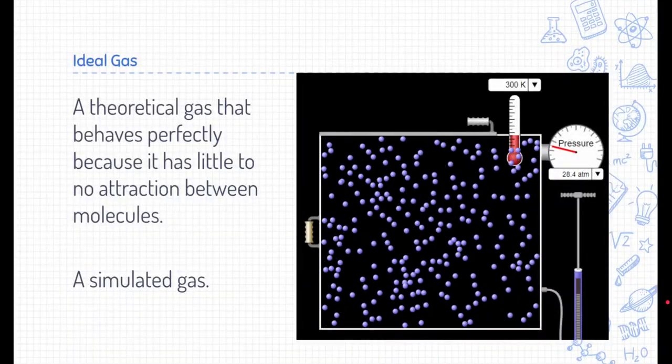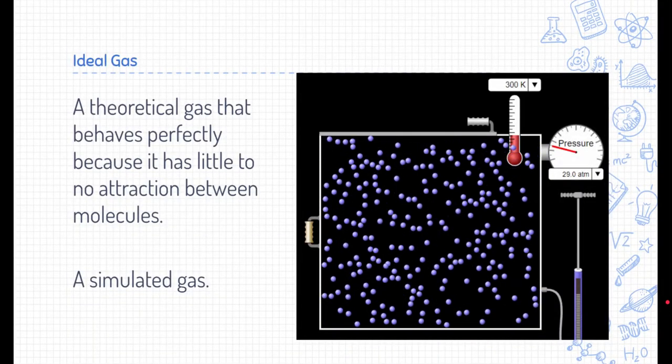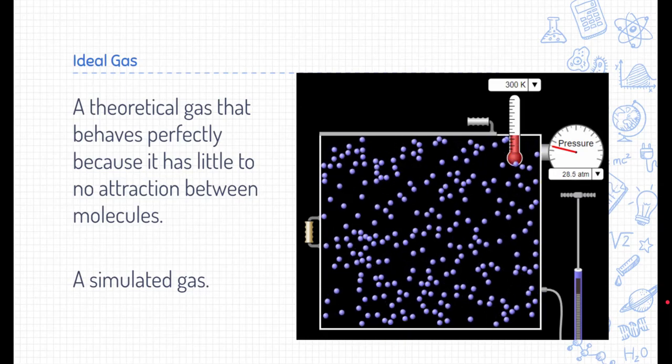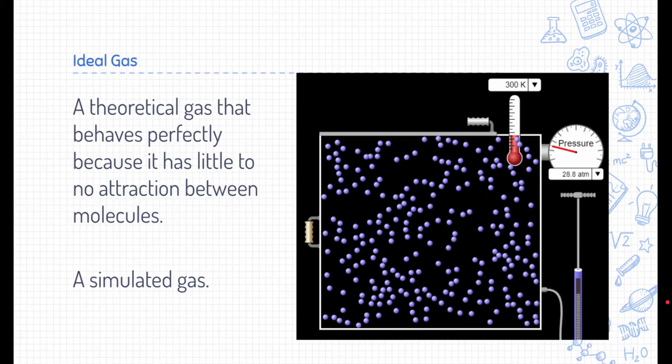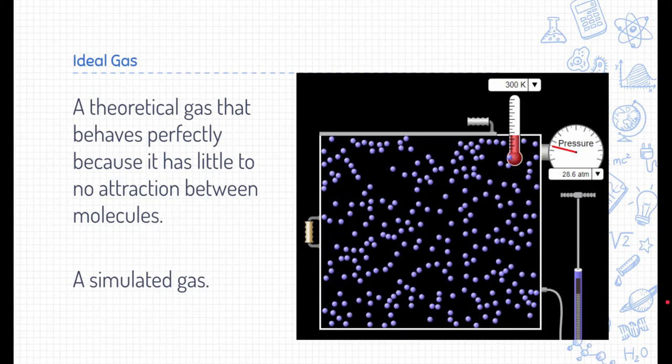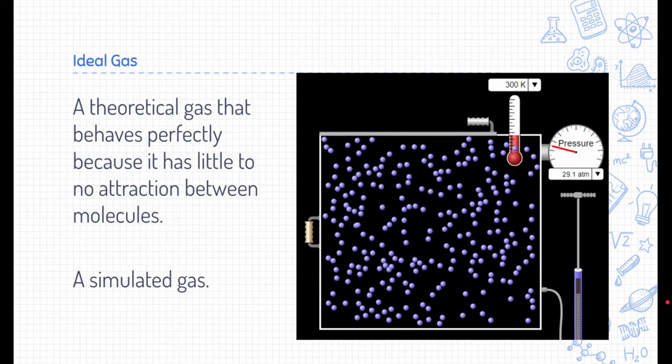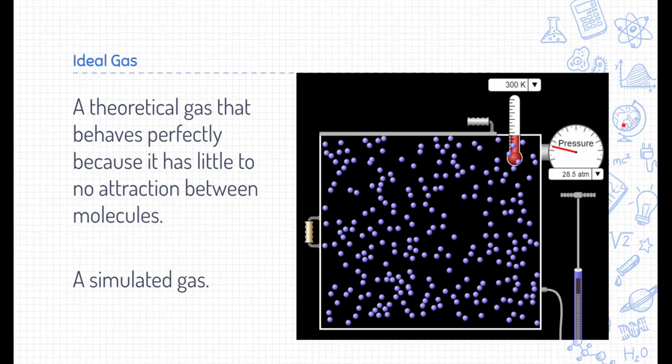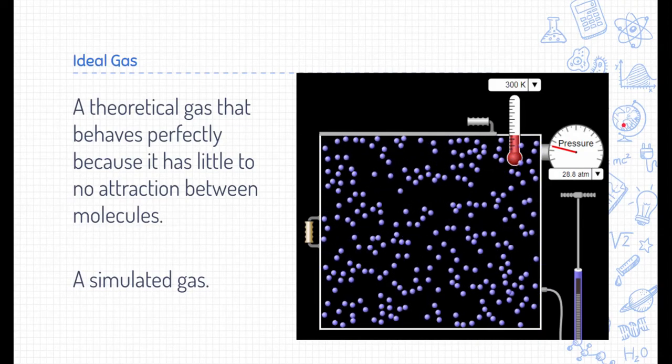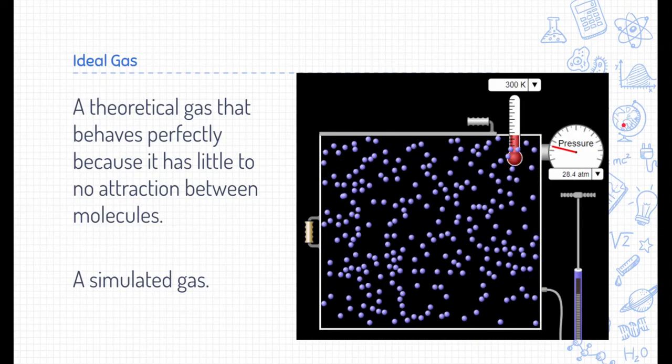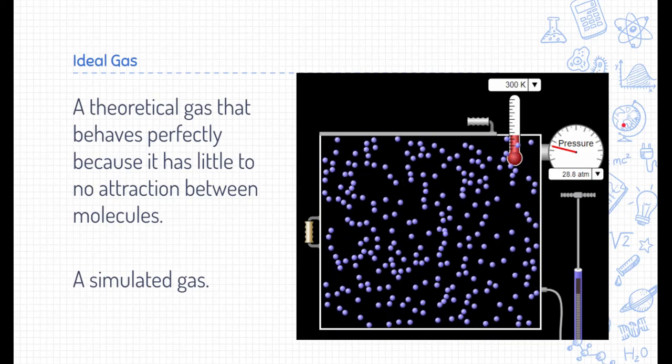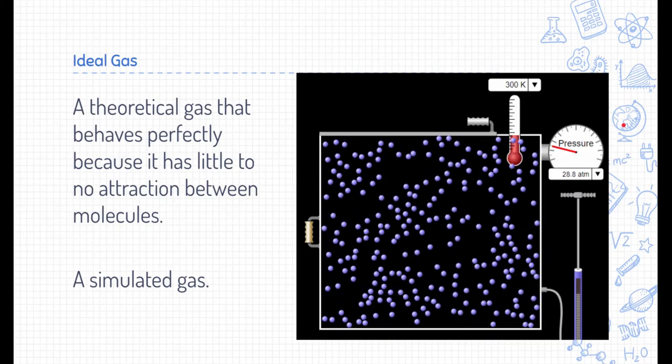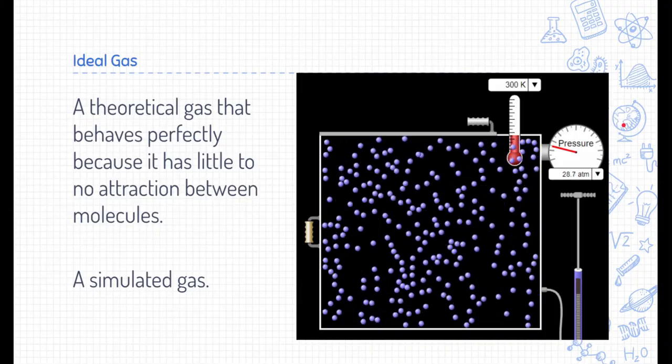Let's start by talking about what an ideal gas is. An ideal gas is ideal, it's perfect. At least theoretically, it's a gas that behaves perfectly because it has little to no attraction between the molecules. You can see over here that we're using a simulation to simulate an ideal gas, and that's often what we do in science, is use simulations in order to understand a real-life scenario a little bit better, and often these simulations are under perfect conditions.